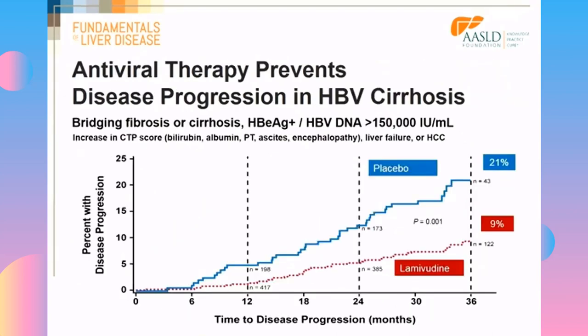The same is true for hepatitis B. Using lamivudine — perhaps the least potent hepatitis B drug — patients on lamivudine had a much lower risk of disease progression compared to patients on placebo.